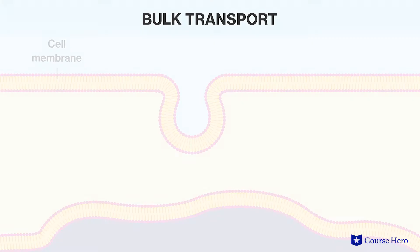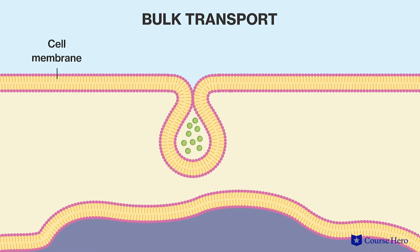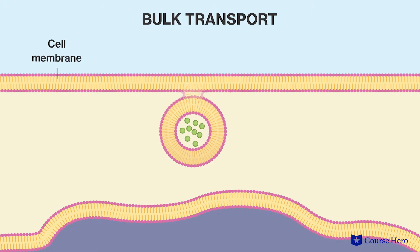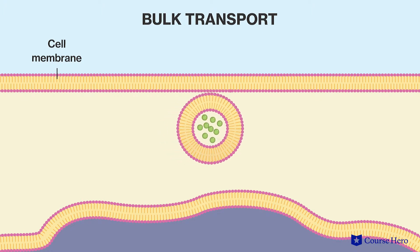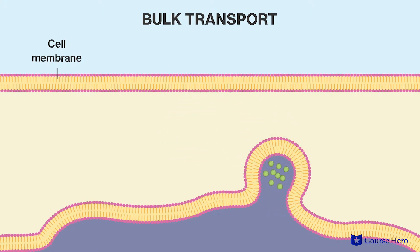Let's look at this mechanism more closely. As a general overview, the transported substances are enclosed in a membrane bubble called a vesicle, created by pinching off a portion of the cell membrane. The vesicle then moves through the cell and fuses with an internal or external membrane, releasing the contents of the vesicle.